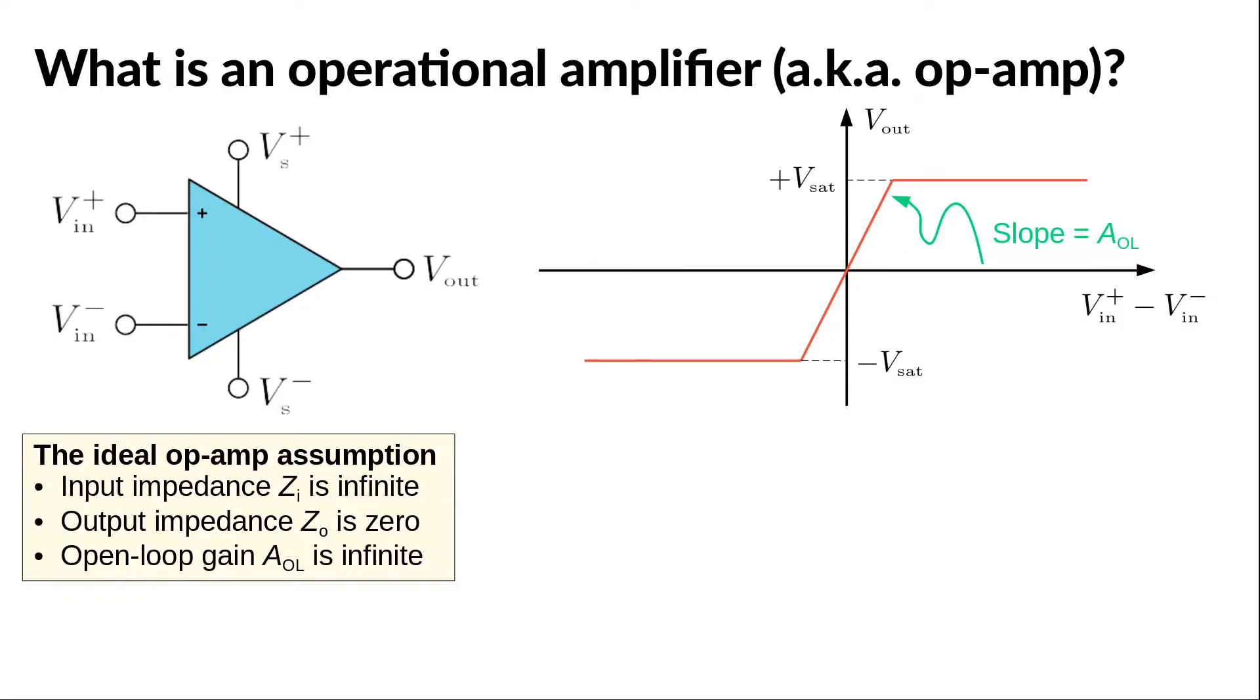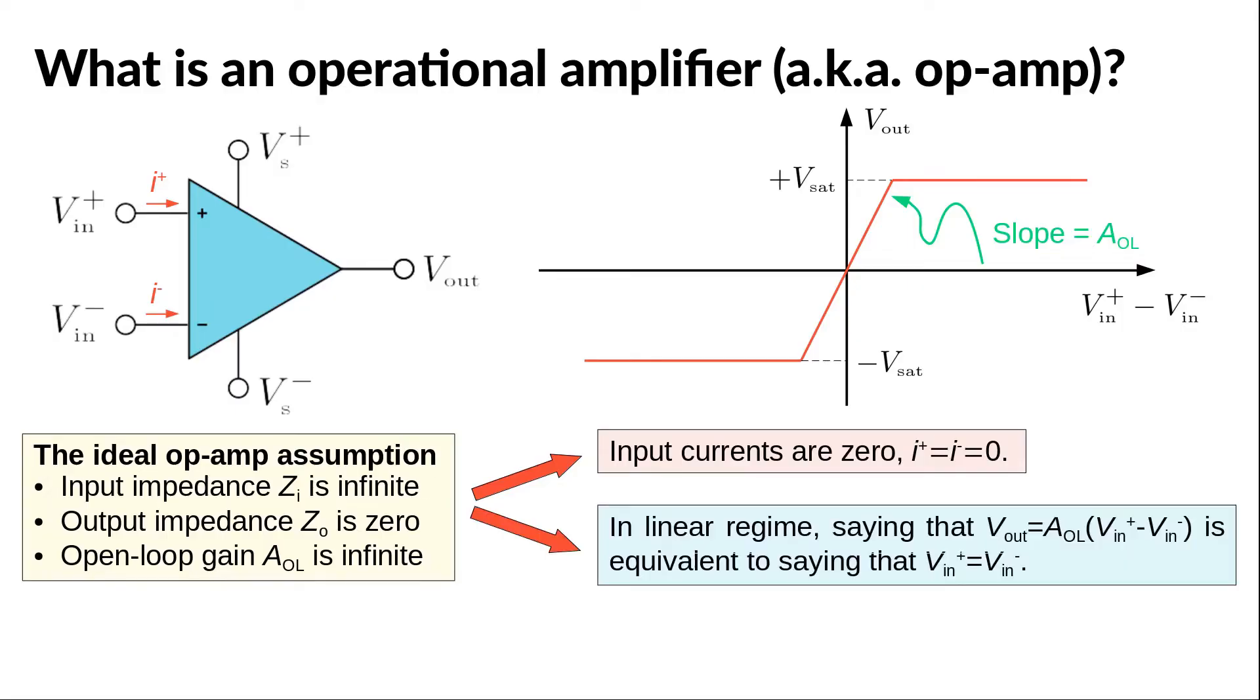This has two direct consequences that make the circuit analysis simple. The infinite input impedance implies that the currents through the inverting and non-inverting inputs are 0.